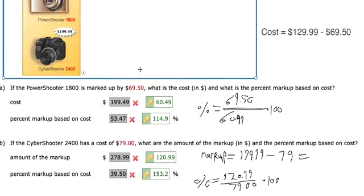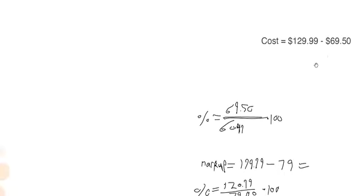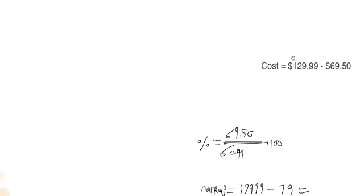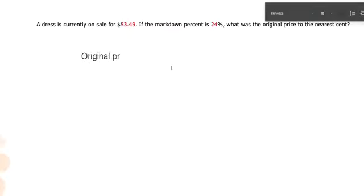And then the other question for the quiz. It's a sale for $53.49. And they told us they marked it down by 24%. So what was the original price? We don't know what the original price was. But if we subtract it by the markdown, that should equal the sale price. Right? You take an original price and they say we're knocking $25 off it. If you make that subtraction happen, then you should have your sales price.